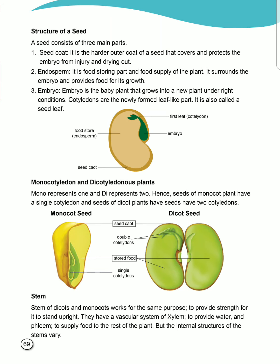Number second: endosperm. Endosperm is the food-storing part and food supply of the plant. It is used to supply food to the plant and to store food, and it surrounds the embryo and provides food for its growth.